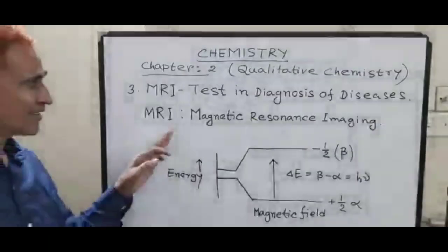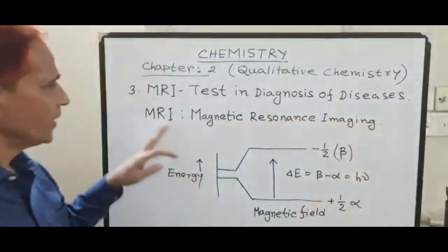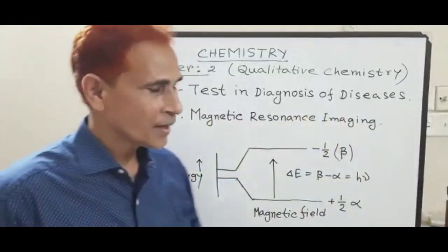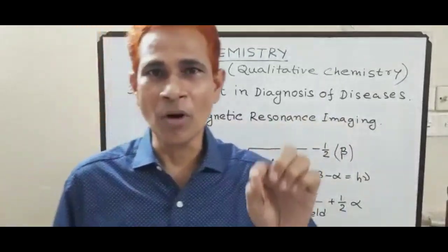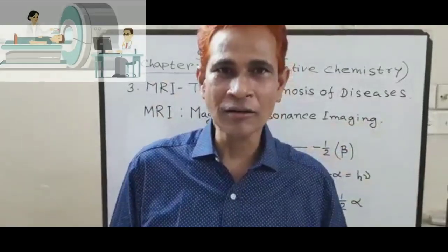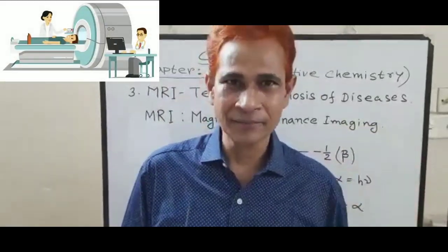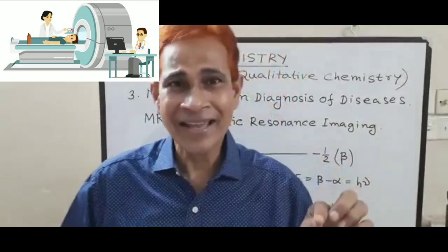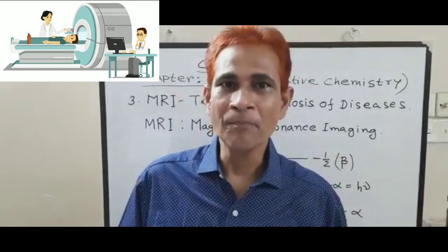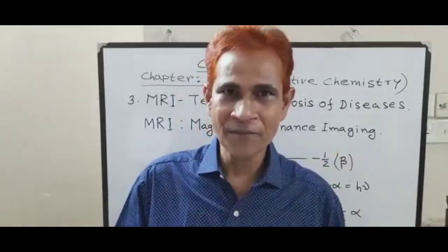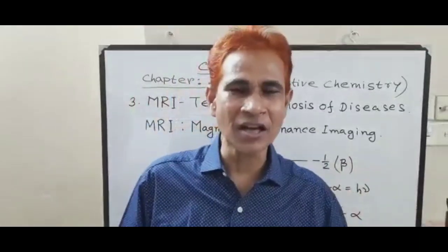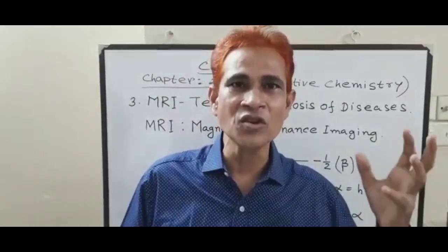MRI test in diagnosis of disease. MRI means magnetic resonance imaging. MRI is the most modern diagnosis technique of brain, spinal cord, and cardiovascular imaging. MRI is a test that uses a magnetic field, radio waves, and a computer to create a three-dimensional picture of different organs of the human body.